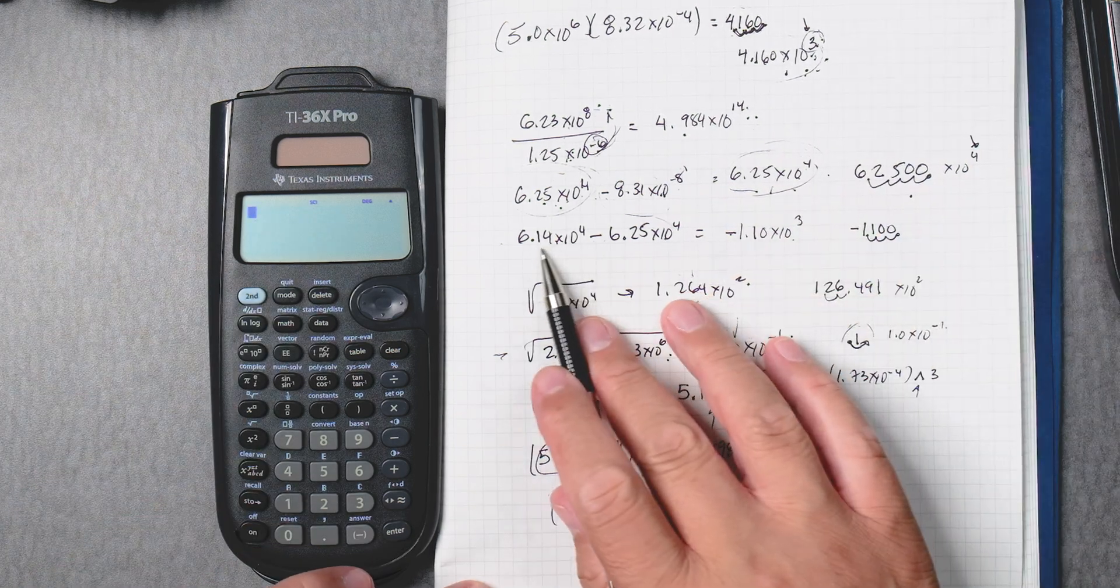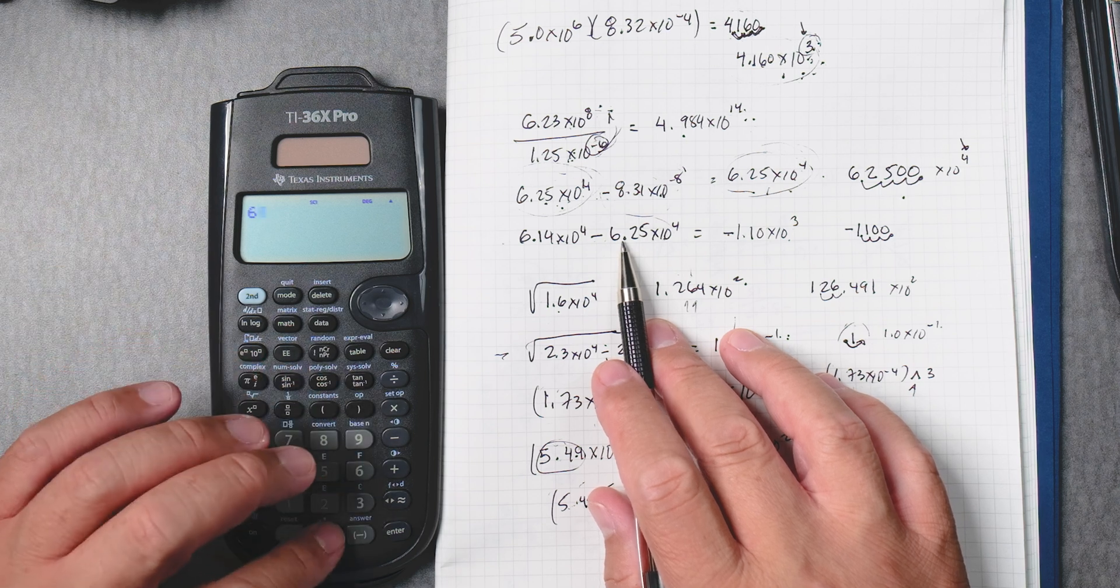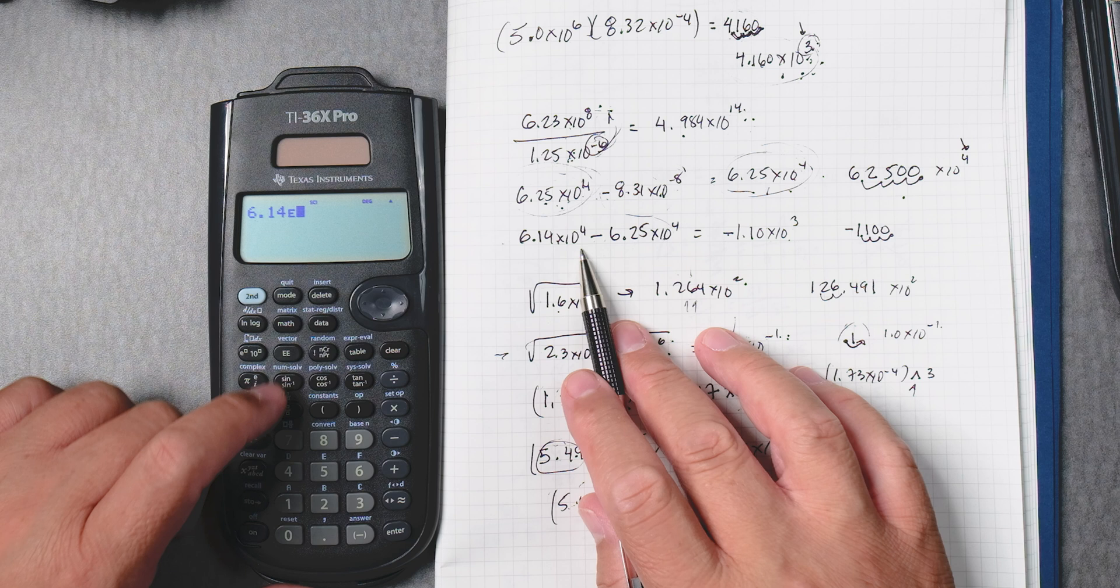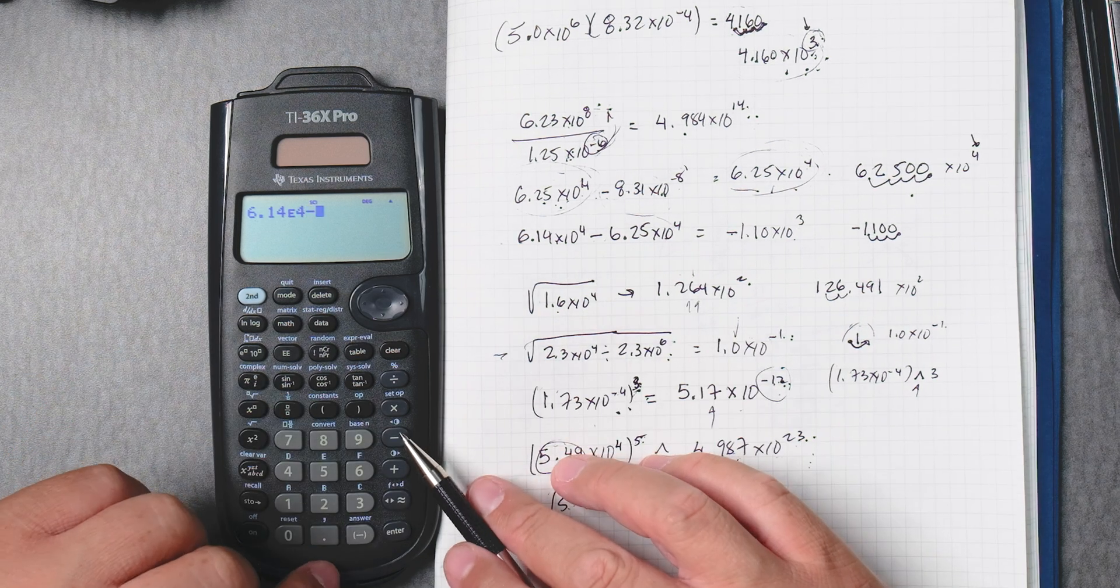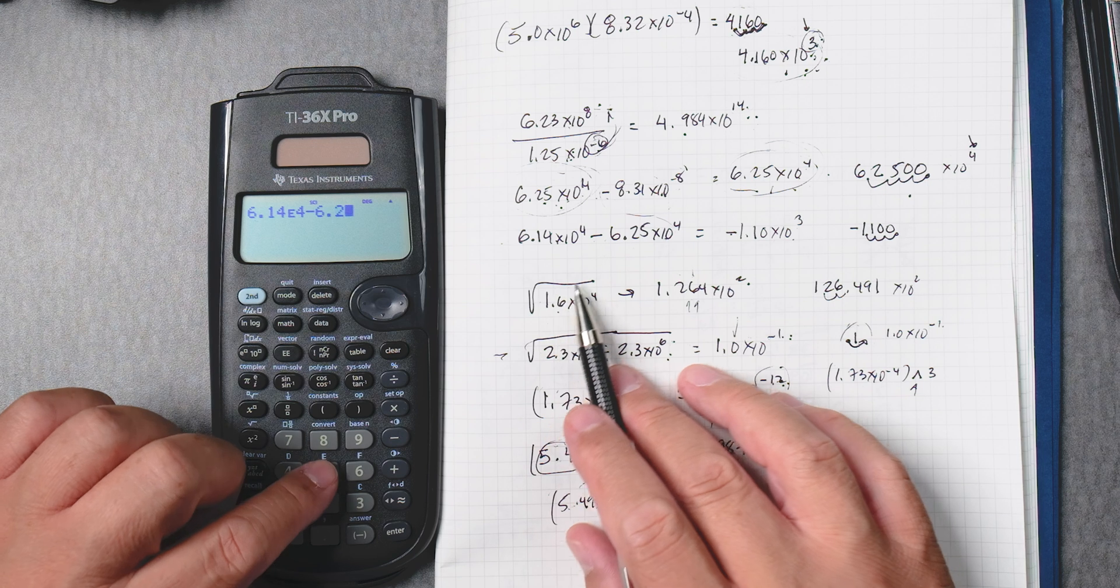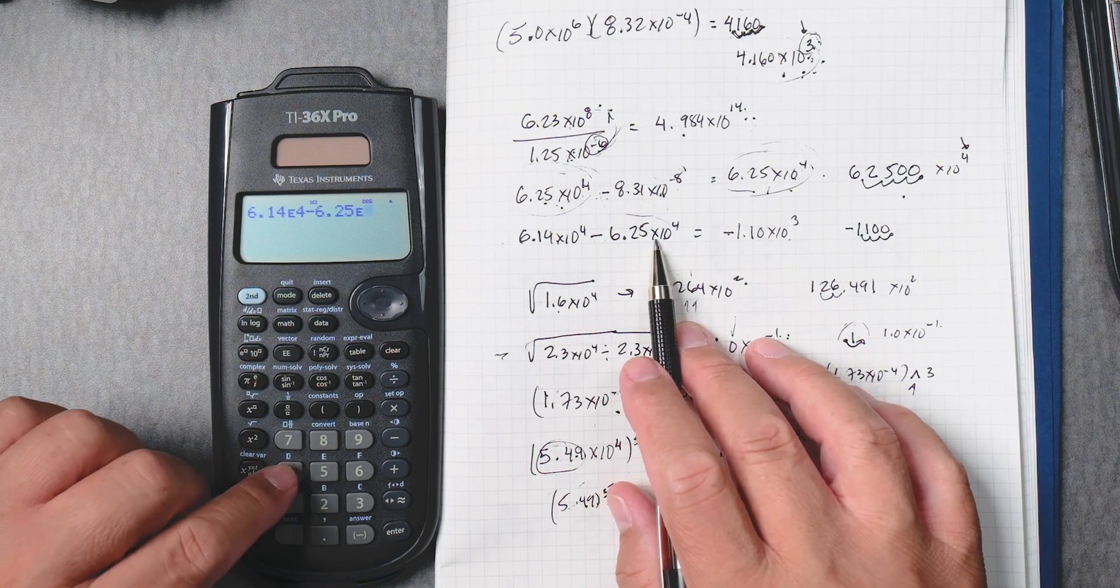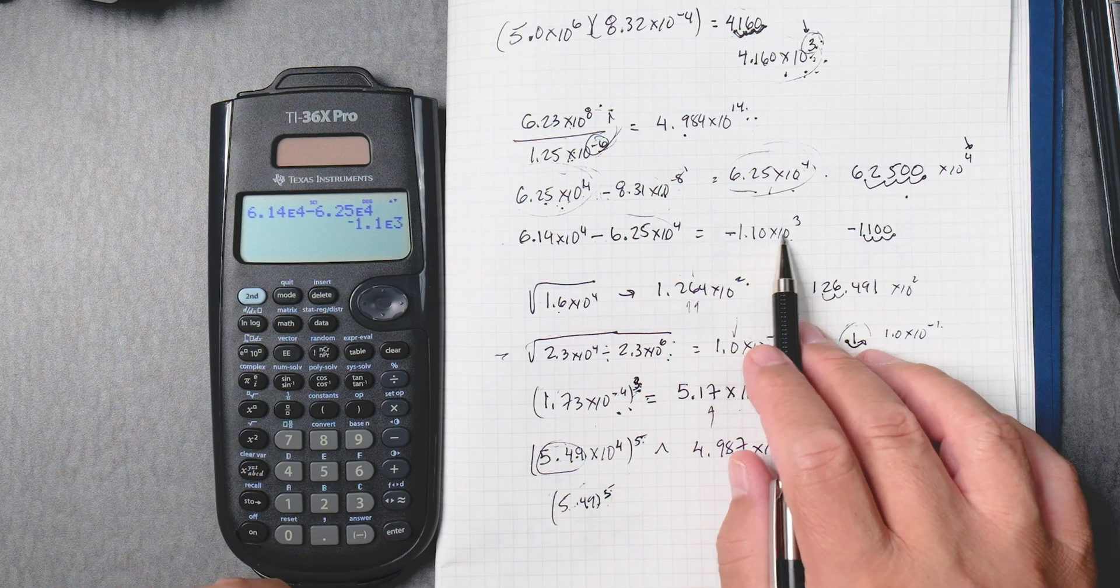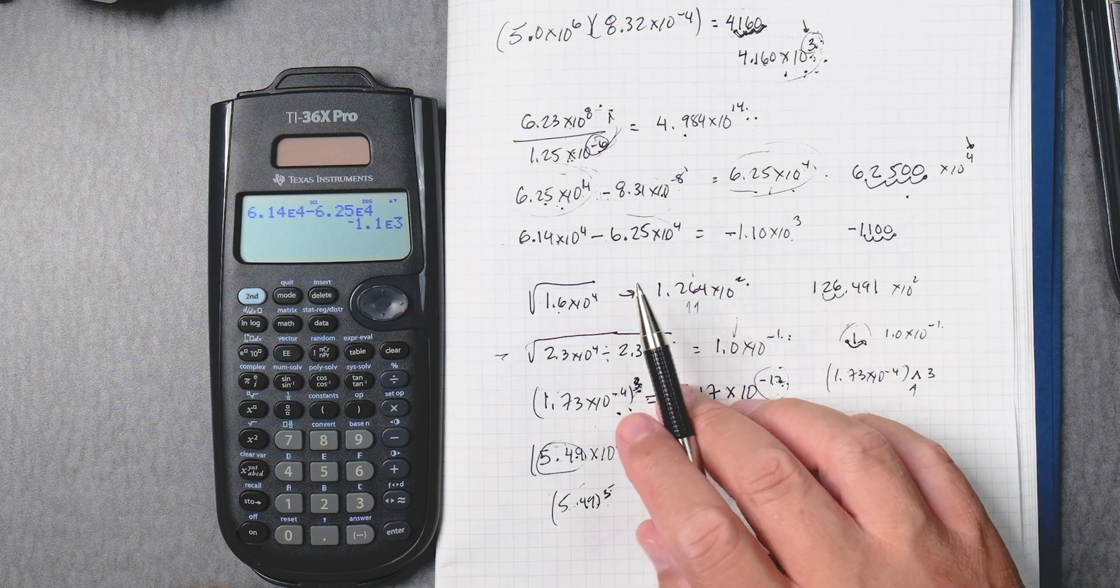Let's do a problem that will have more visual result. So, 6.14 to the power of 4, take away 6.25 to double E times 10 to the fourth. Enter. And you get negative 1.1 times 10 to the third. And yes, you can have negative values.